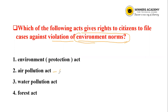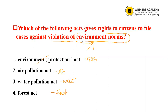Air Pollution Act means there are two things. Water pollution means there are two things — it's a violation of forest. It's a violation of environment. Environment Protection Act of 1986. It's a violation under the Air Pollution Act of 1981. Water pollution is 1974.